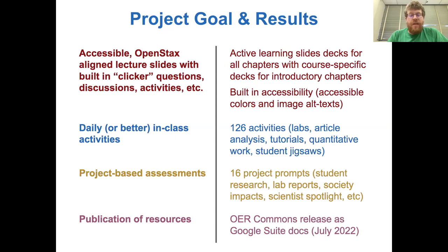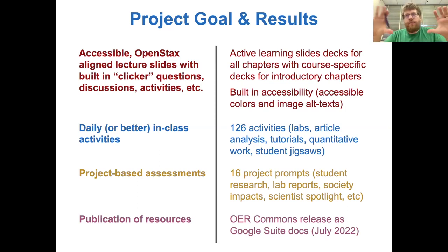Those activities are a mixture of labs, article analysis where they're reading and investigating scientific publications, tutorial activities, quantitative work, and student jigsaws where they're teaching each other. We've published 16 different project prompts — some involving silo impacts or scientists' spotlight, where they're looking at diversity in science. And in July, we released all of these resources as Google Suite documents with a large overarching Google Sheets list indexing all the materials to make them accessible.